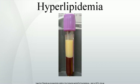Familial hyperlipidemias are classified according to the Fredrickson classification, which is based on the pattern of lipoproteins on electrophoresis or ultracentrifugation. It was later adopted by the World Health Organization. It does not directly account for HDL, and it does not distinguish among the different genes that may be partially responsible for some of these conditions.